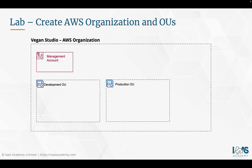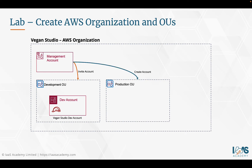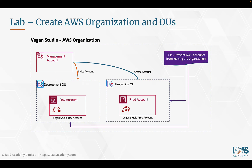We already have the development account we created in the last section. We need to send out an invitation to that development account and bring it into the organization as a member. We're then going to create a brand new account called the production account, which will be used for hosting our applications in the production environment. In addition to that, we're also going to set up service control policies. When you set up AWS organizations and invite or create new member accounts, each and every member account still continues to have a root user.